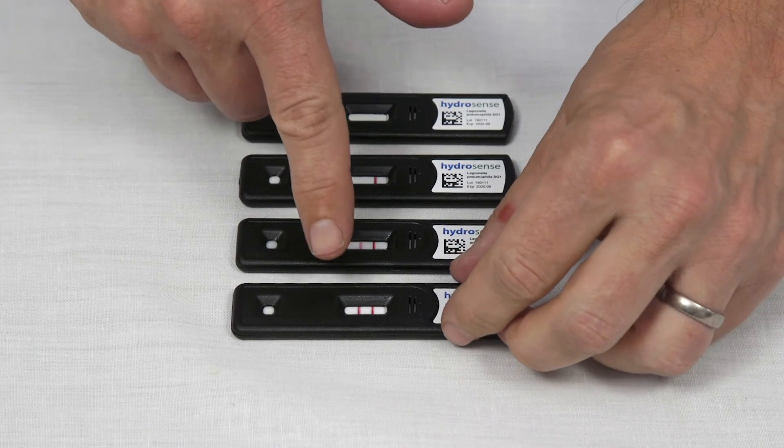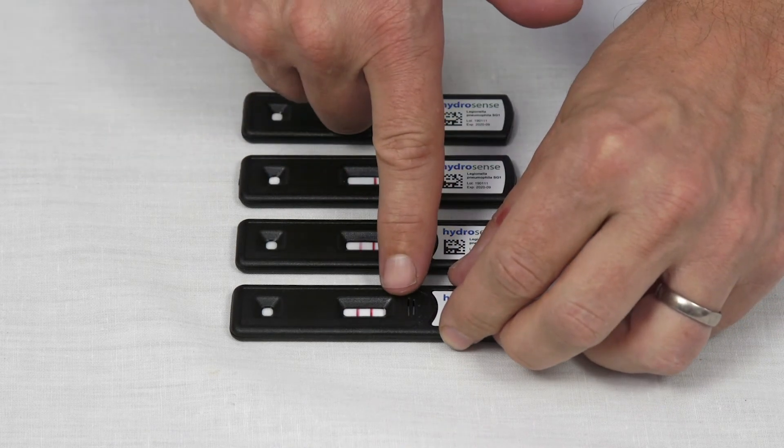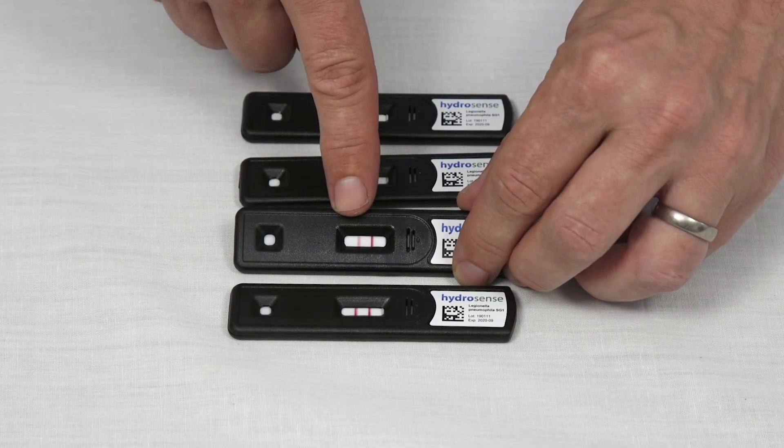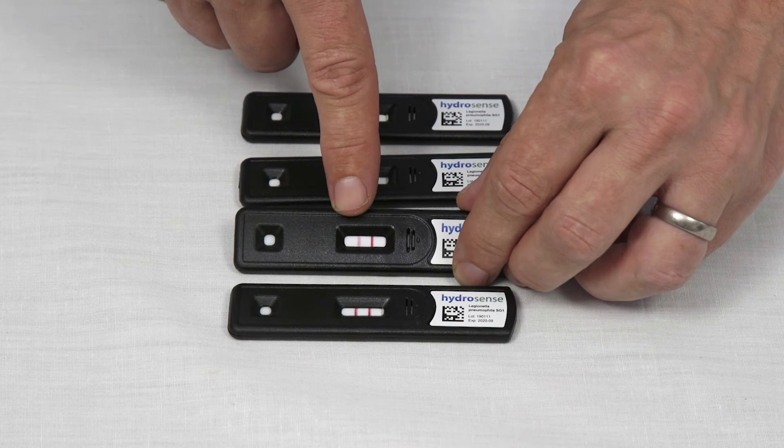The test is composed of two lines: a test line and a control line. If both lines are present, then Legionella pneumophila serogroup 1 has been detected above the cutoff of the test kit. The positive signal at the test line may be weak, but any line at this position indicates a positive.